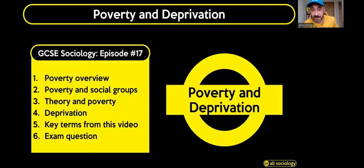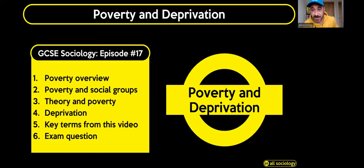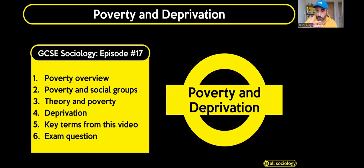To recap: we covered an overview of poverty, different types, how poverty disproportionately affects the lower social classes, women, disabled people, older people, younger people and ethnic minorities. We looked at functionalist, new right, Marxist and feminist views on why poverty happens. We considered Townsend's Relative Deprivation Index and how deprivation is made up of both material and cultural inequalities. We ran through 10 key terms and a nine-mark exam question on different views about why poverty happens.